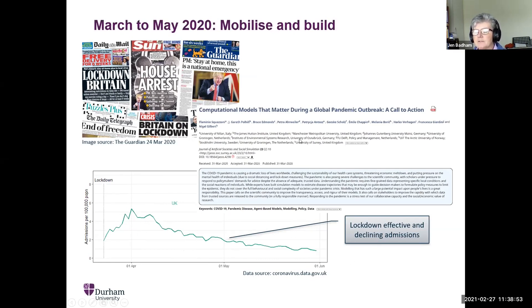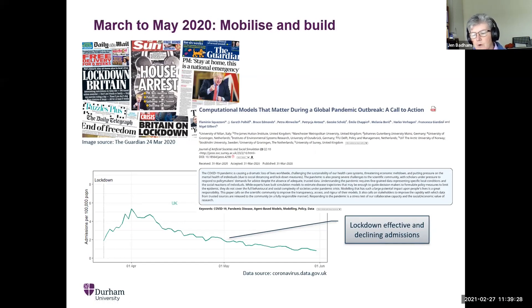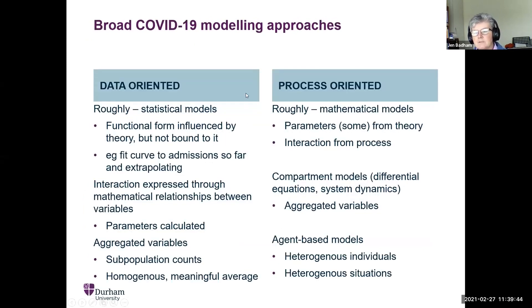We also had a scientific context: the models that had stimulated or motivated the lockdown were criticised in a debate about how much science was driving policy and whether the science was right. The debate was largely about whether the models were open enough. To some extent there's a false choice here, because decisions had to be made on the information that was available, not the best information that would be available in several weeks' time.